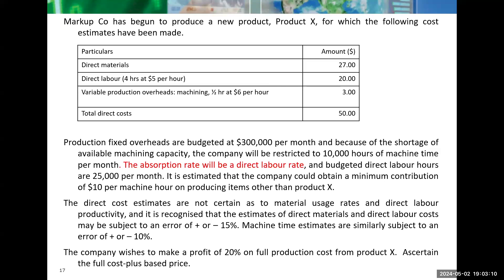So if they want to use the machine for making anything else apart from Product X, they are able to earn a minimum contribution of $10 per machine hour. This is relevant because there is a limiting factor of machine time. The direct cost estimates are not certain — it is recognized that estimates of direct materials and direct labor costs may be subject to an error of plus or minus 15%, and machine time estimates are similarly subject to an error of plus or minus 10%.